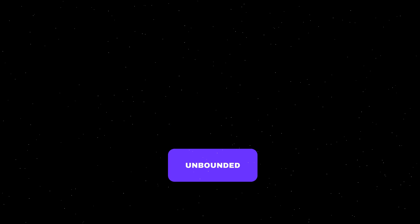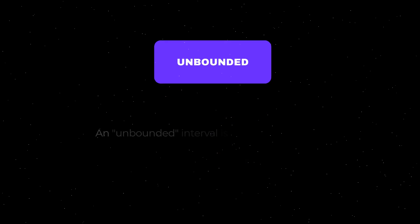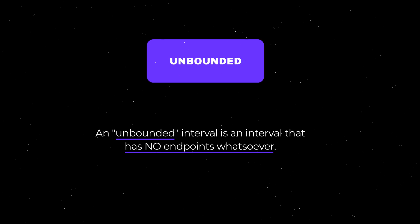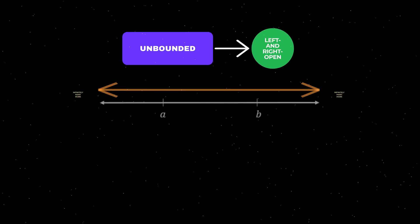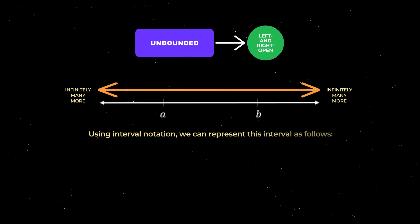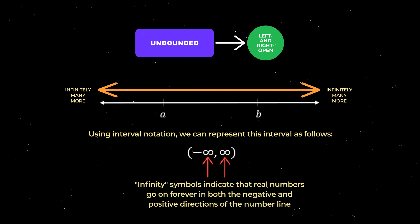An unbounded interval is an interval that has no endpoints whatsoever. Hence, an unbounded interval can only be an open interval, as shown here on this number line. Using interval notation, this unbounded interval can be represented as follows, where the negative and positive infinity symbols indicate that the numbers included in this interval go on forever in both the negative and positive directions of the number line, respectively.